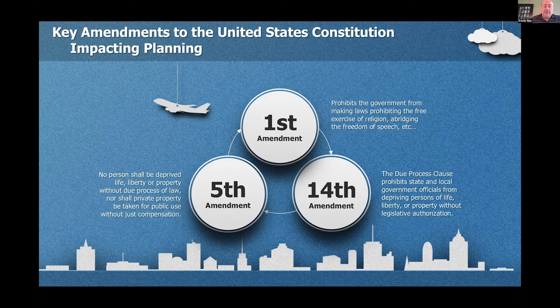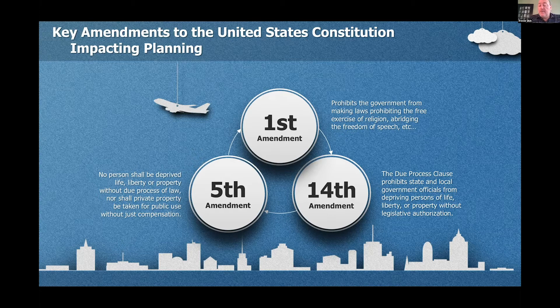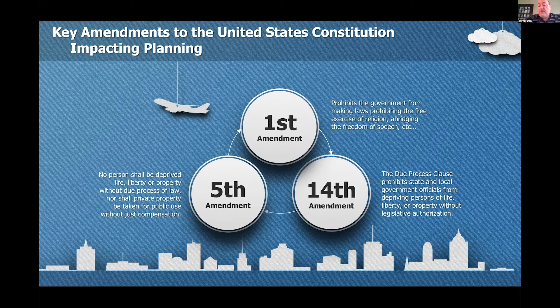Some key amendments to the United States Constitution that impact planning. The First Amendment prohibits the government from making laws prohibiting the free exercise of religion, the freedom of speech, or of the press, or the right of people to peaceably assemble. When you think about the First Amendment, ask yourself how it impacts you as a planner. Things that jump to mind are sign ordinances, religious land uses, and RLUIPA. Ever since the 2015 decision in Reed v. Town of Gilbert, sign ordinances have needed updating — almost every community in the country had to be updated from that decision. Reed v. Town of Gilbert was a U.S. Supreme Court case that clarified when municipalities may impose content-based restrictions on signage.